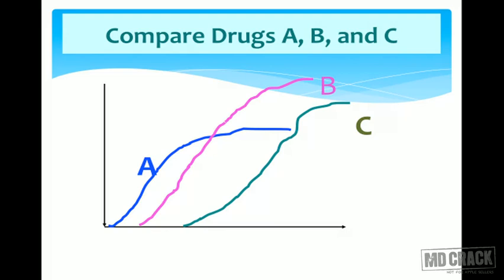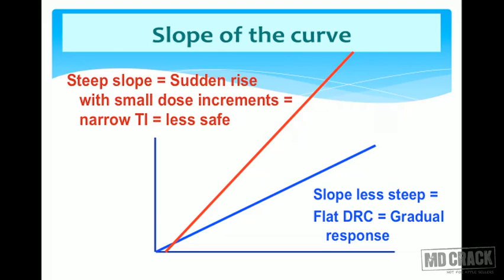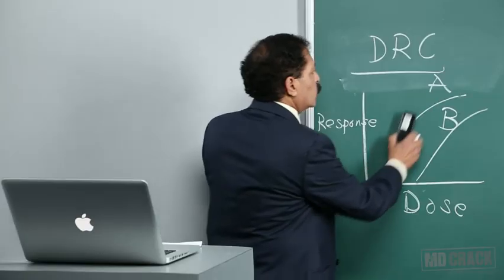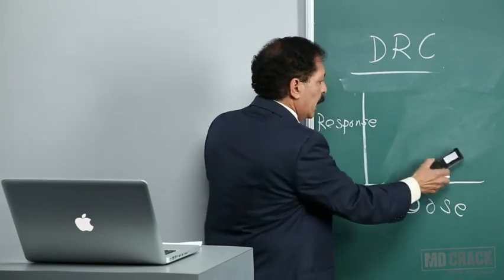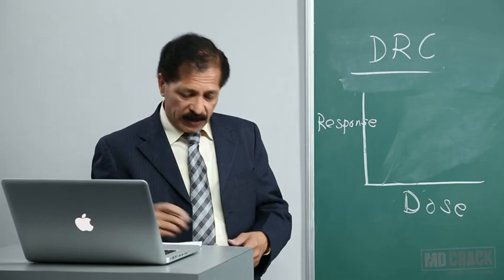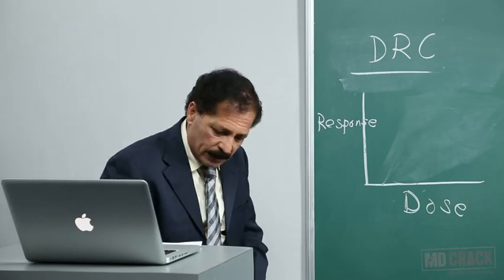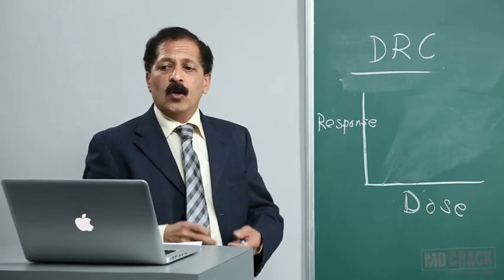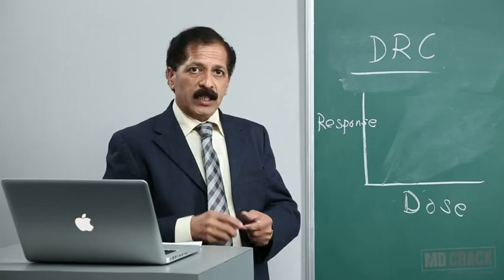You can use the slide comparing drugs A, B, and C with various potencies and intrinsic activities for self-study. The third important property is the slope of the curve. To simplify, we use a log dose-response curve. Comparing curves A and B on such a graph — drug A has a comparatively steep slope.